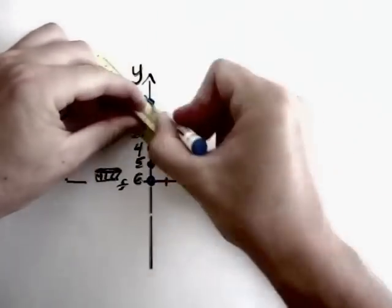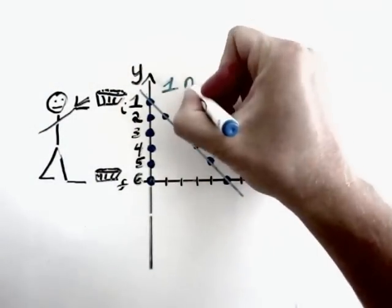Now by connecting the dots, or interpolating, we see we have one negative slope.